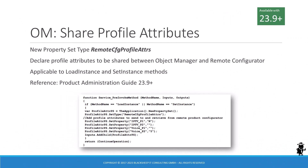Another Order Management-related feature introduced in 23.9 is the ability to share profile attributes between sessions of object managers and remote configurator instances. Developers can now declare a list of profile attributes via custom script in the load instance or set instance methods of the remote complex object instance service. These profile attributes can then be sent or retrieved in either the remote configurator instance or the object manager. The Project Administration Guide 23.9 or higher includes documentation and script examples.